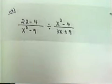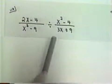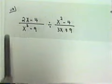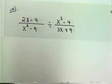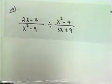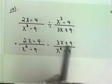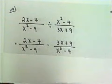Let's look at an example with algebraic fractions. We have 2x minus 4 over x squared minus 9, divided by x squared minus 4 over 3x plus 9. To divide fractions, the first thing you do is invert the divisor and multiply. So if we invert x squared minus 4 over 3x plus 9, we get 3x plus 9 over x squared minus 4. Inverting means to take the reciprocal, or simply flip it. Now we have a multiplication problem.